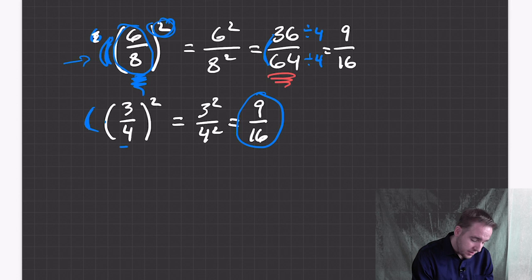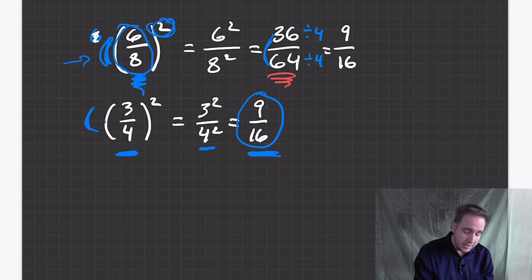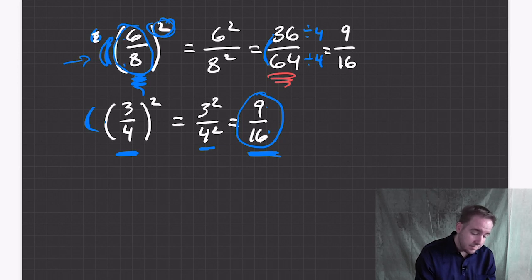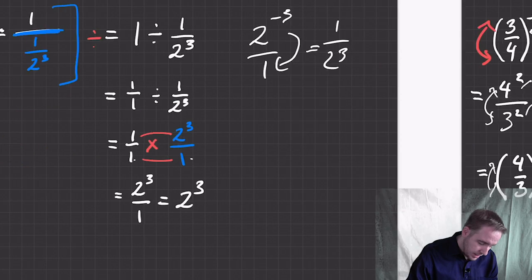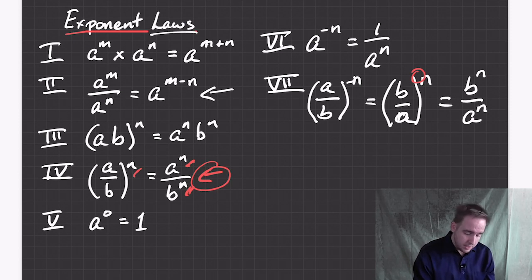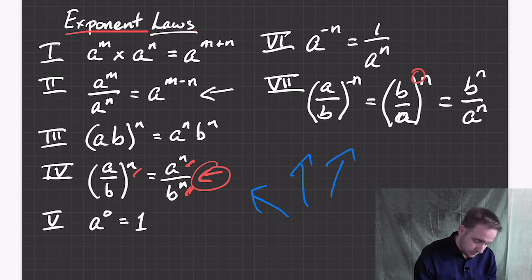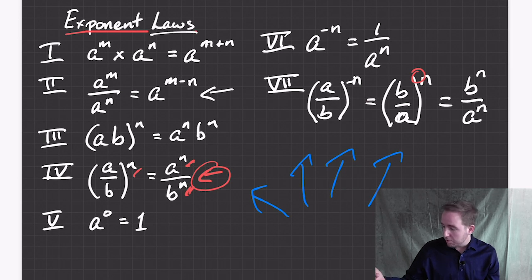Also, if the fraction cannot be reduced, then after you do the exponent law that fraction also cannot be reduced. So if you can tell a fraction is already in lowest terms, you don't need to worry about whether the expanded numbers will share a common factor. I'd suggest making a list of all the laws on a piece of paper and having it next to you when you work. Don't be too concerned about memorizing the rules right away — just look them up every time. After 20, 30, 40 questions it all gets settled in and you can do it.